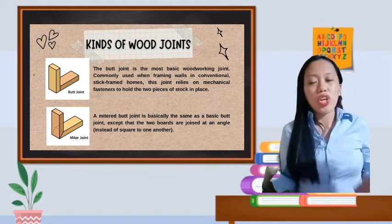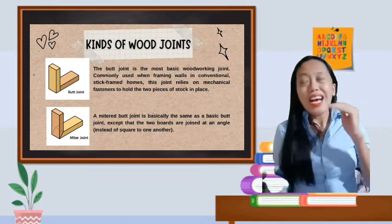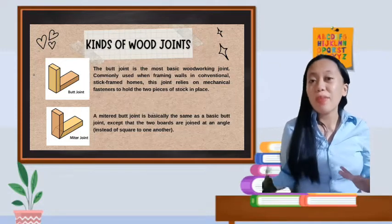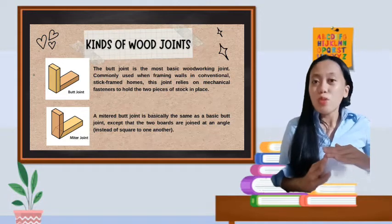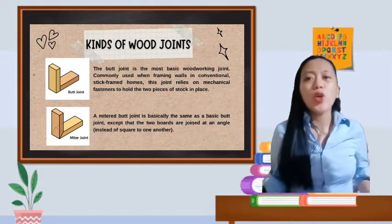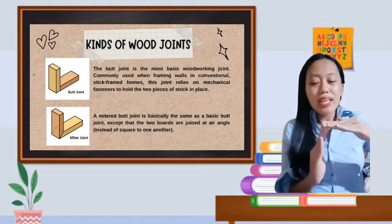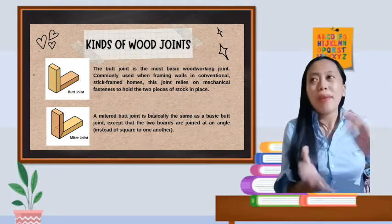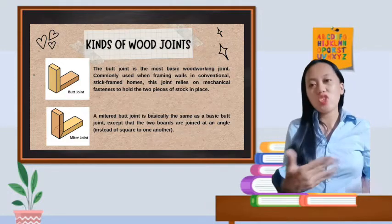Next is mitered butt joint. A mitered butt joint is basically the same as basic butt joint, except the two boards are joined at an angle instead of square to one another. If you notice in the mitered joint, the ends have an angle. It's also basic, but different from the basic butt joint.